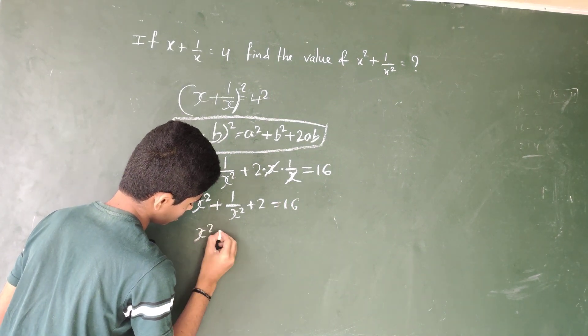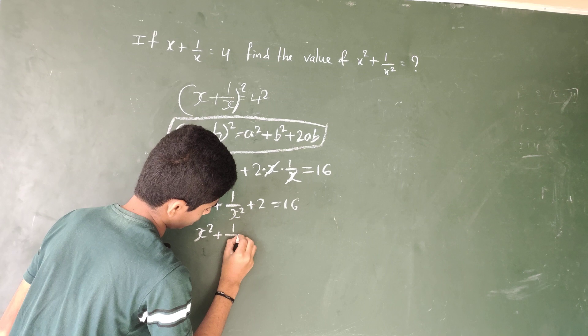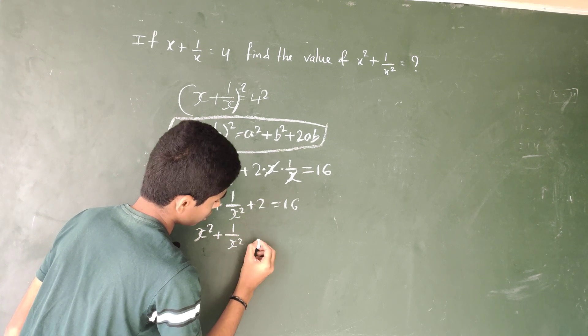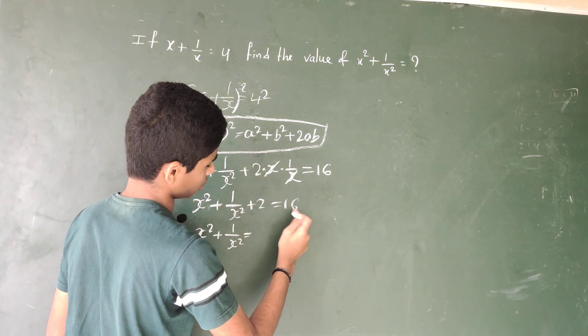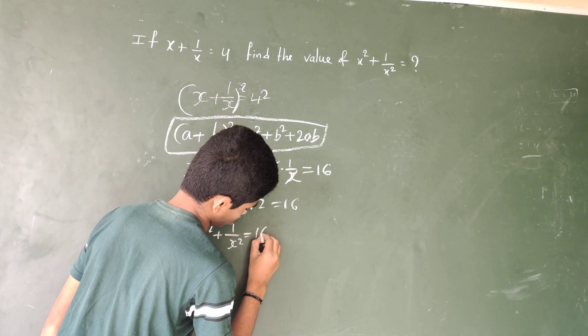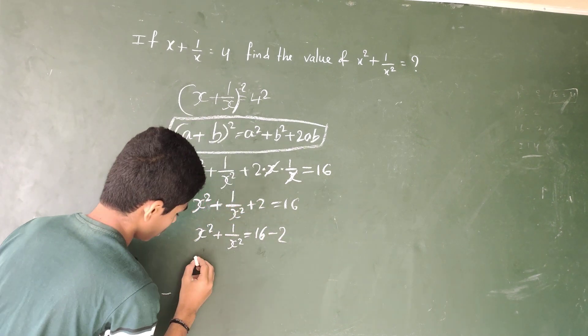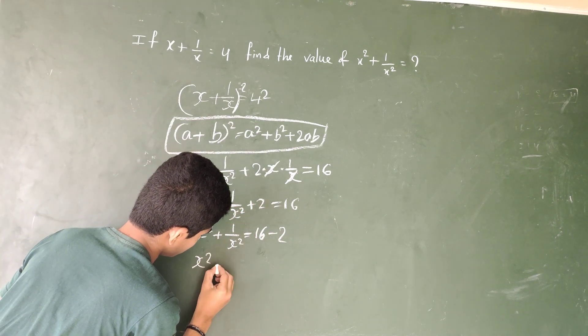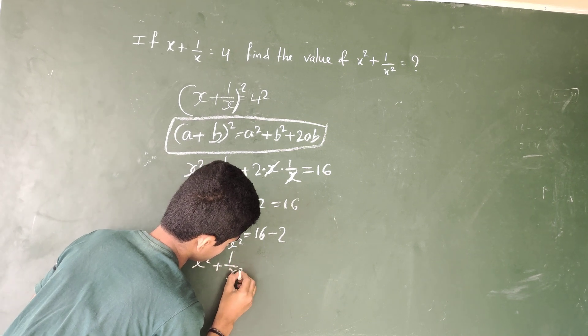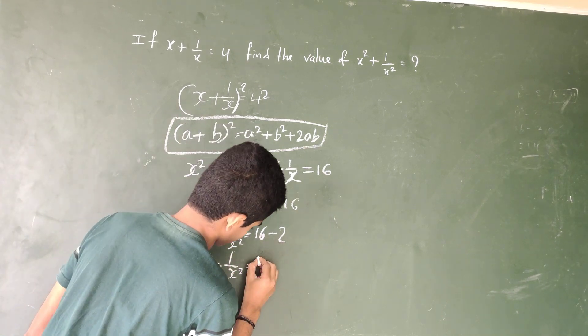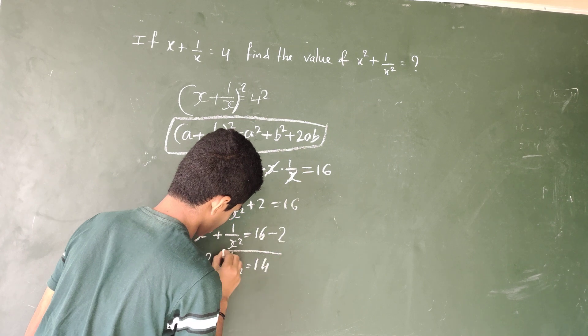x square plus 1 by x square equal to, the plus 2 goes to minus 2. x square plus 1 by x square equal to 16 minus 2, 14. Answer is 14.